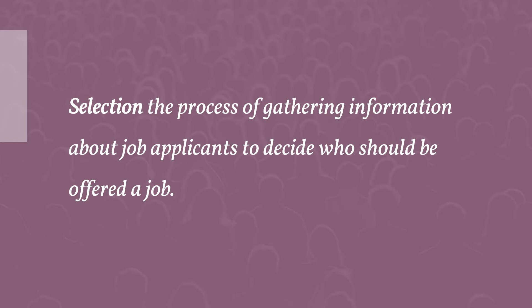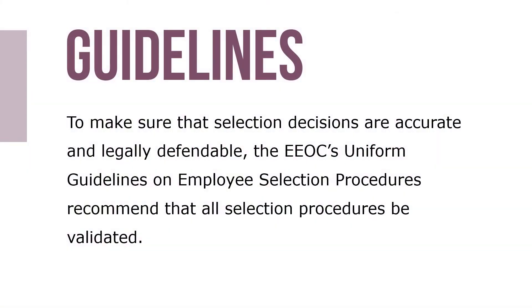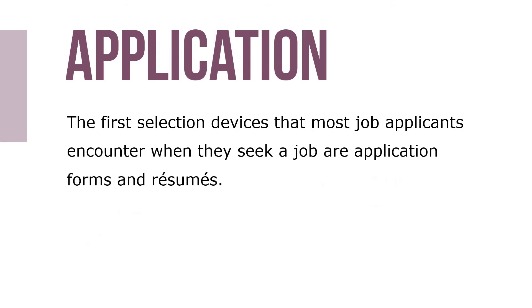Selection is the process of gathering information about job applicants to decide who should be offered a job. To make sure that selection decisions are accurate and legally defensible, the EEOC's Uniform Guidelines on Employee Selection Procedures recommend that all selection procedures be validated. Validation is the process of determining how well a selection test or procedure predicts future job performance. The better the prediction, the more valid a test is said to be. The first selection devices most applicants encounter are application forms and resumes.